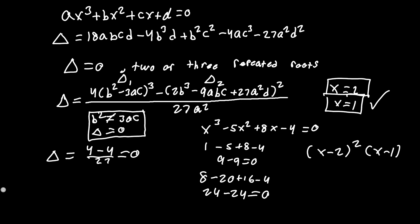You could also use the cubic formula, but that would be much longer. As we see here, using the discriminant values of the polynomial directly and testing Δ₁ to determine if it's a triple or double repeated root is much more efficient.